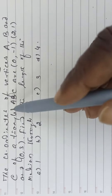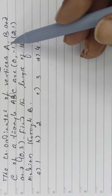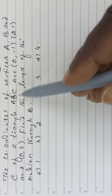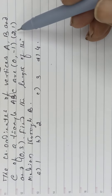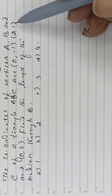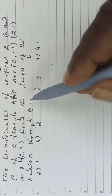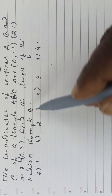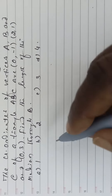The coordinates of vertices A, B and C of a triangle ABC are A(0, -1), B(2, 1) and C(0, 3). Find the length of the median through B.